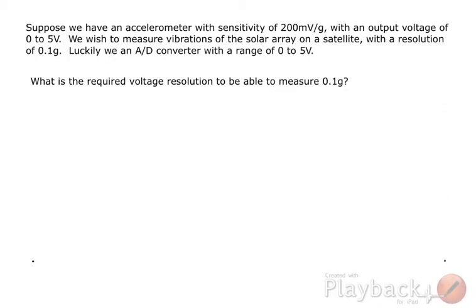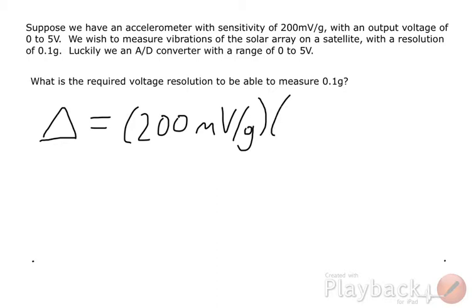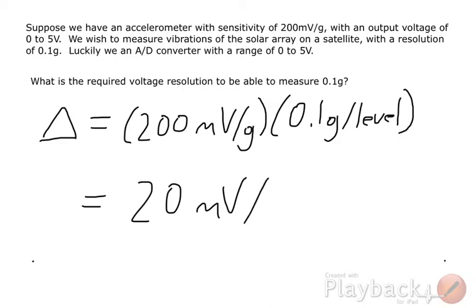First, what is the required voltage resolution to be able to measure 0.1 g? Our voltage resolution is a product of our sensitivity and a desired acceleration resolution. That turns out to be 20 millivolts per level.